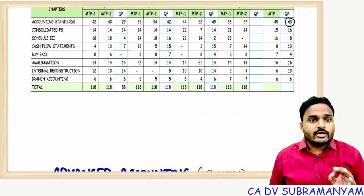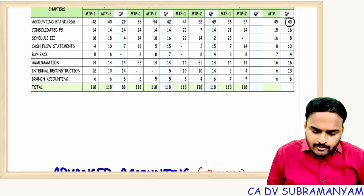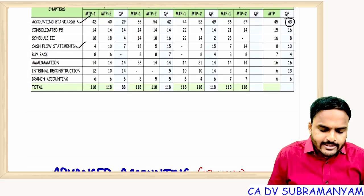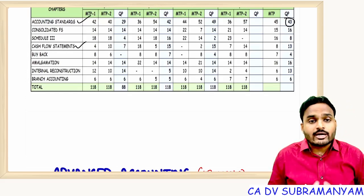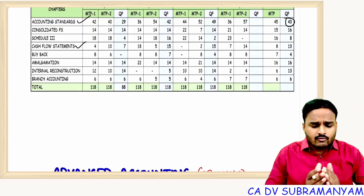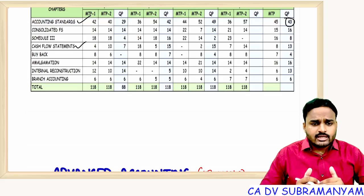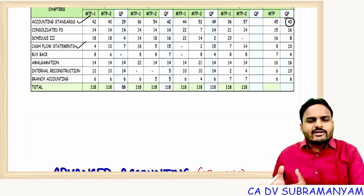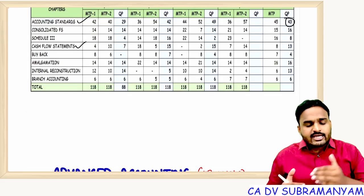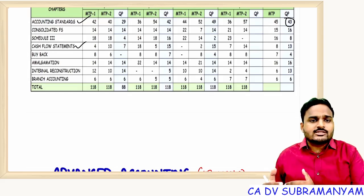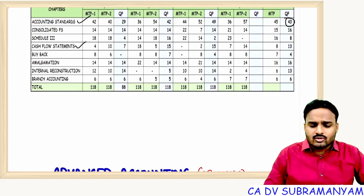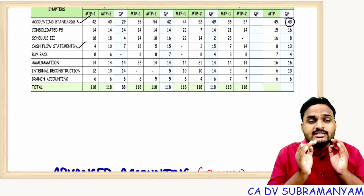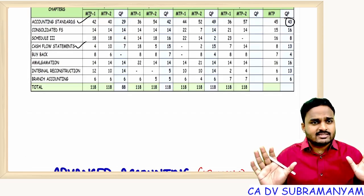Second priority: prepare cash flow statements. First complete accounting standards — but don't study them one after another immediately. Study one standard in the morning, one in the evening, next day morning one, next day evening one, like that. With 9 days, 9 into 2 equals 18 standards — you can complete all of them.